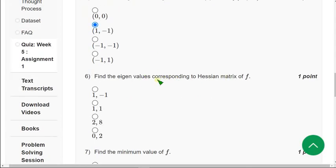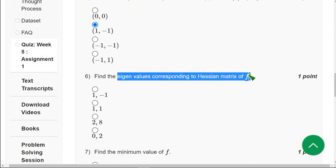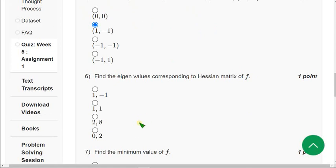They are asking to find the eigenvalues corresponding to the Hessian matrix of f. So, when I did this, I have got the eigenvalues as 2 and 8. So, which option? It is third option. 2 comma 8.